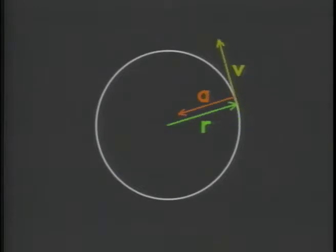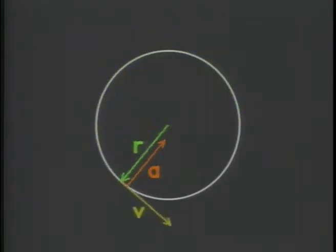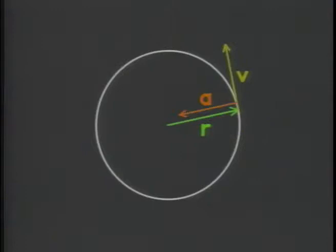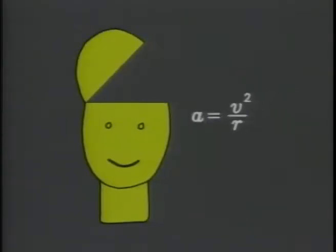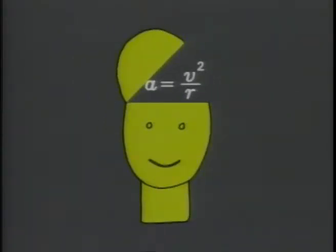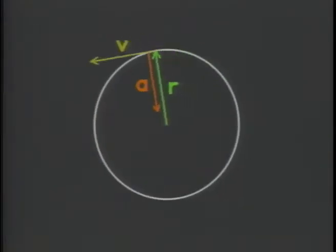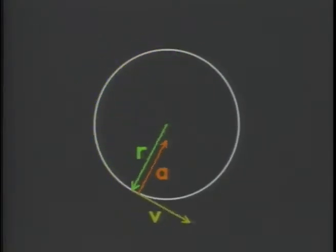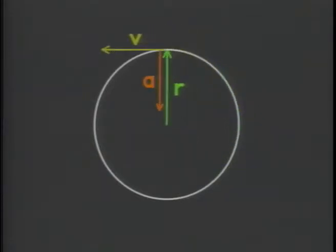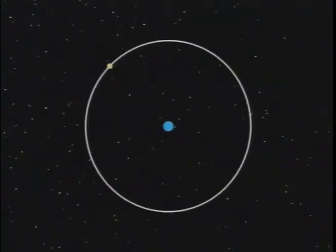So the acceleration points along the radius vector, but in the opposite direction. The acceleration toward the center of the circle — the centripetal acceleration — is equal to the tangential speed squared divided by the radius. Those are the relationships among radius, velocity, and acceleration, locked together in the eternal dance of uniform circular motion.